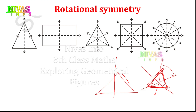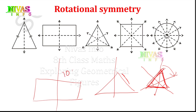Here we have a rectangle. This is a line of symmetry. We can say this is rotational symmetry. We can change it the same way at 180 degrees.